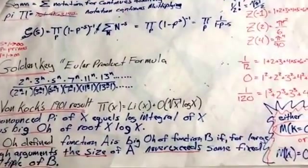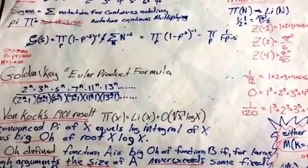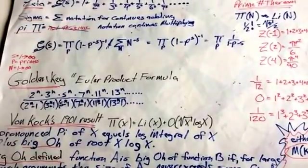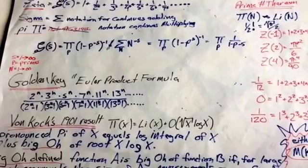But in this, I hope to also show how the von Koch's result pronounced pi of x integral log integral of x plus big O of root x log x works.